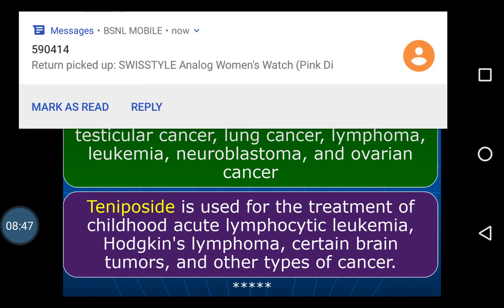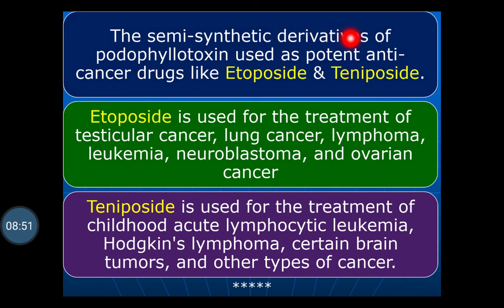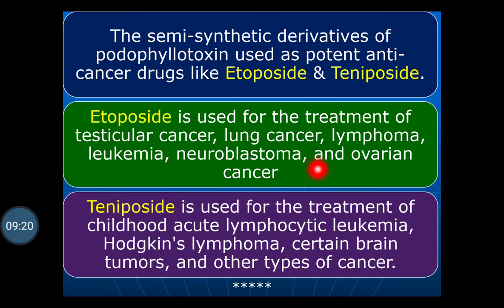The semi-synthetic derivatives of podophyllotoxin are used as potent anti-cancer drugs: etoposide and teniposide. Etoposide is used for the treatment of testicular cancer, lung cancer, lymphoma, leukemia, neuroblastoma, and ovarian cancer. Teniposide is used for the treatment of childhood acute lymphocytic leukemia, Hodgkin's lymphoma, certain brain tumors, and other types of cancer.